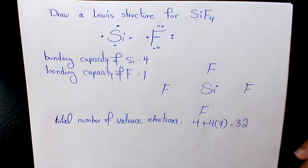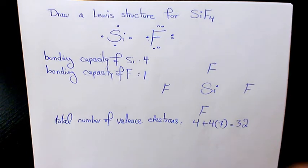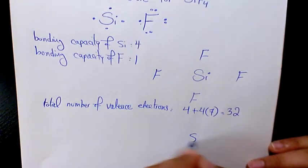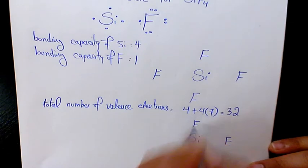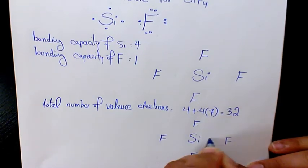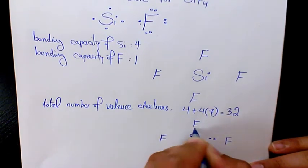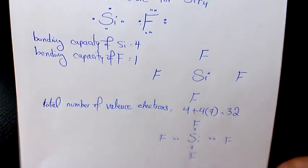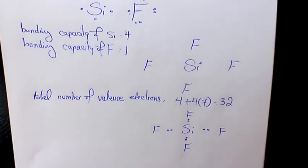Next, we need to place one pair of electrons between each adjacent pair of atoms. Every two dots represents a bonding electron pair that forms a single covalent bond. So we have Si with F, F, F, F, placing one pair — that's two electrons — between each bond.